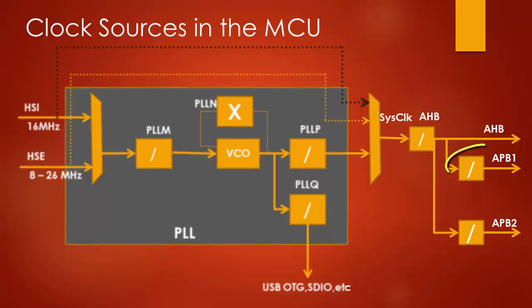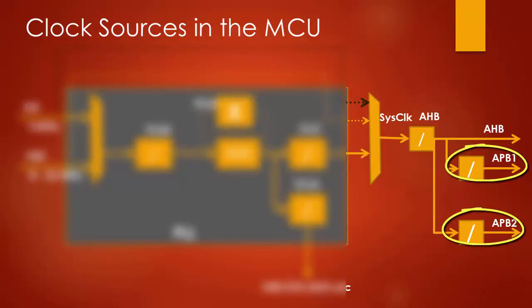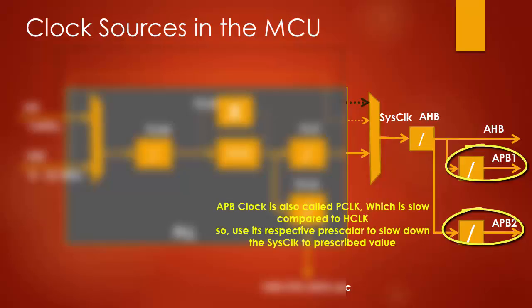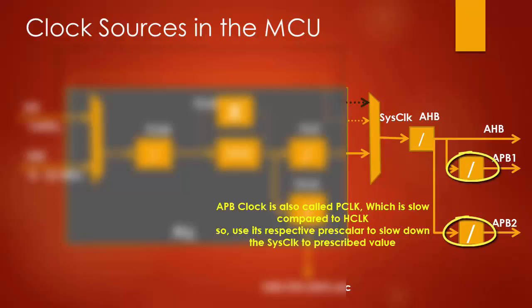Apart from that, there are two peripheral buses: APB1 and APB2. These are slower compared to the HB bus in terms of operating frequency, so all peripherals connected to APB1 and APB2 are called slow peripherals. Their clocks are derived from the system clock using prescalers. In the STM32F4, the maximum frequency of APB1 should not exceed 42 MHz and APB2 should not exceed 84 MHz. Prescalers bring the system core clock down to the permissible value.